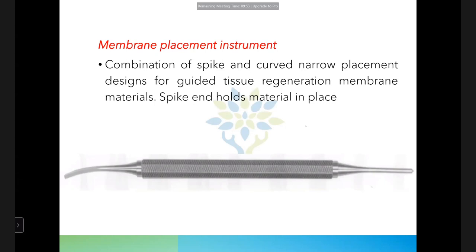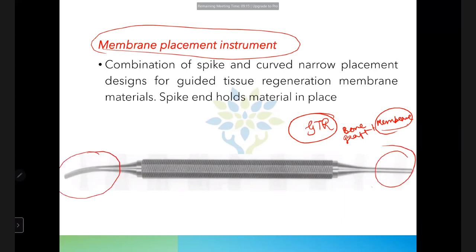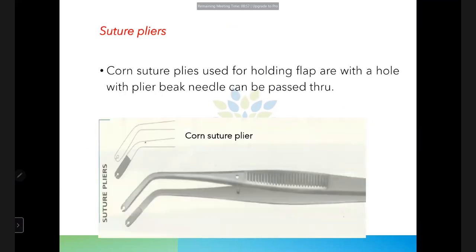The membrane placement instrument is used for guided tissue regeneration (GTR). Membranes — such as chorion or amnion membrane — may be placed alone or with bone graft. This instrument has a spike end and curved end, specially designed to hold the GTR membrane in place during placement.